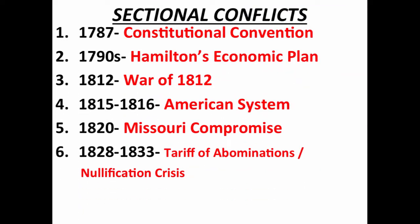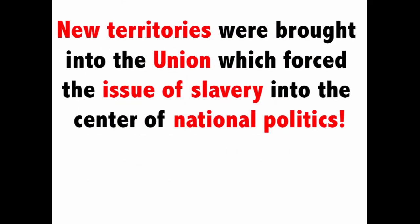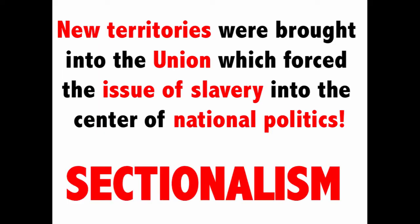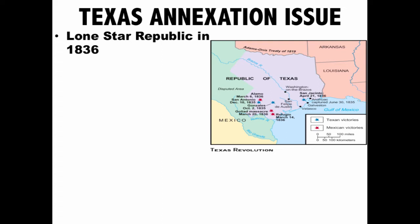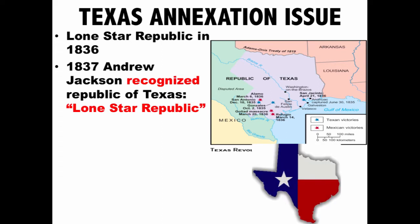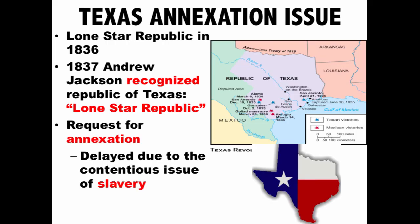The number of sectional conflicts dramatically escalated in the 1840s. New territories were brought into the Union, which forced the issue of slavery into the center of national politics, leading to sectionalism. The problem with these new territories was that they would upset the balance of power between North and South. Texas became an independent republic in 1836, and while Andrew Jackson recognized the Republic of Texas as an independent nation, there was a request for annexation that was delayed due to the contentious issue of slavery.